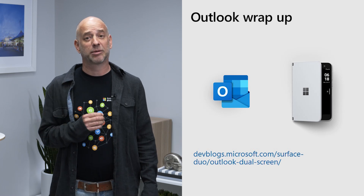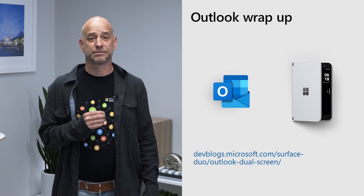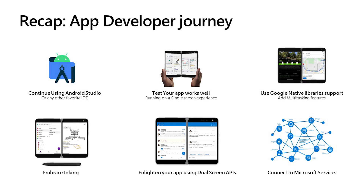I would like to recap some of the items we discussed here today. Follow our three-step guide to get your app ready for dual screens. Step one: test your app — it should just work. Step two: make small changes — consider drag and drop, launching activities on the other screen, or adding pen and inking support. Step three: think about how you can utilize one of our dual-screen design patterns to bring more value to your app.